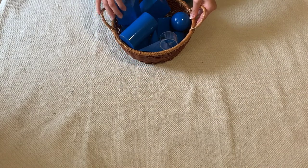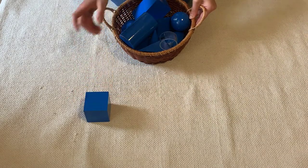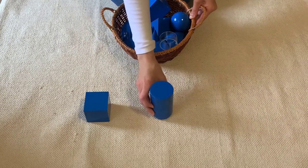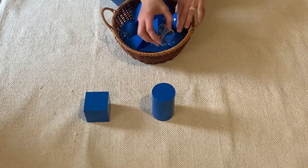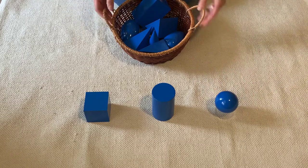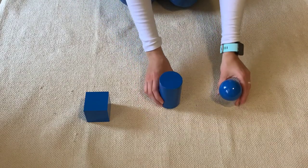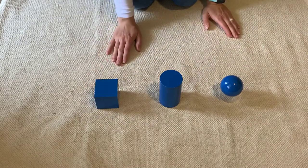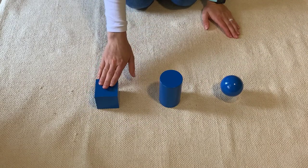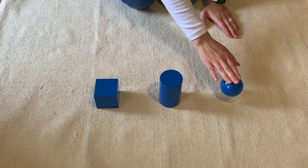So we're going to learn about a cube, a cylinder, and a sphere. Let me put this basket to the side and look which three shapes we have here. Cube, cylinder, and sphere.